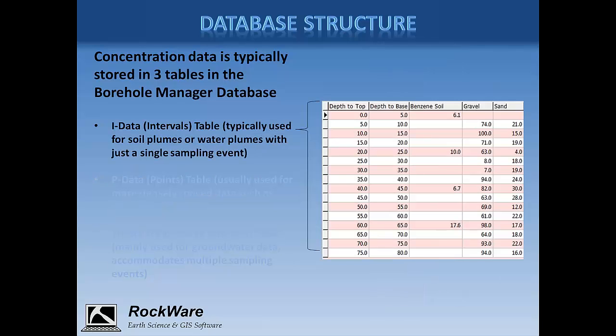This is an example of what the interval data table looks like. It's a generic place to store downhole numerical information linked to intervals. The database has a field for both a top and a base depth, and then you can store as many types of measured values as you need to. We typically see concentration information from soil samples stored here, as well as geotechnical and assay data.